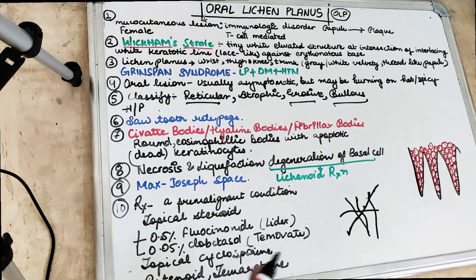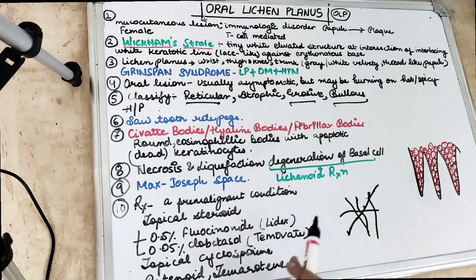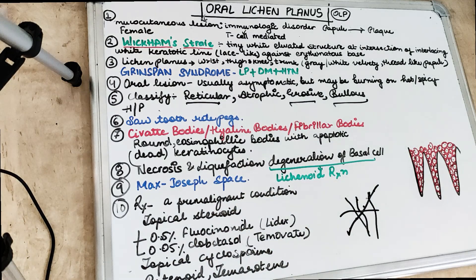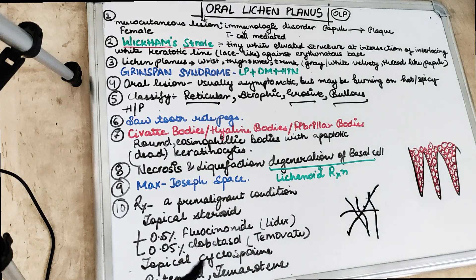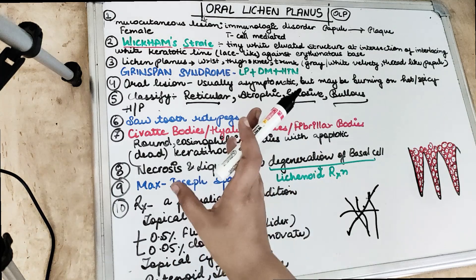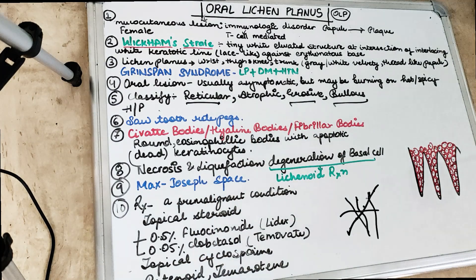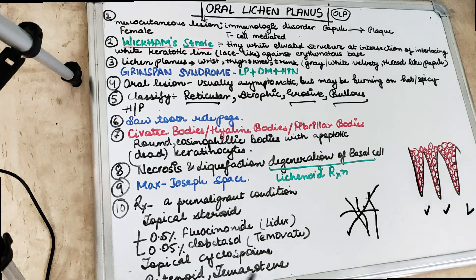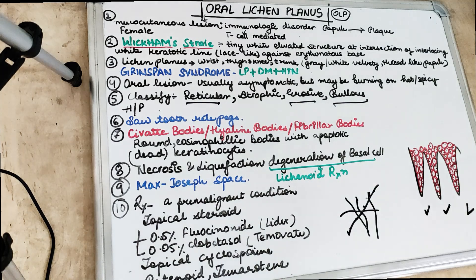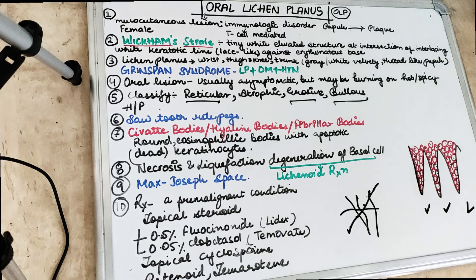Clinically, oral lichen planus lesions are usually asymptomatic, but patients often complain of burning pain with hot and spicy food. On histological cross-section, we see saw-tooth shaped rete pegs — short, sharp, and pointy rete pegs.